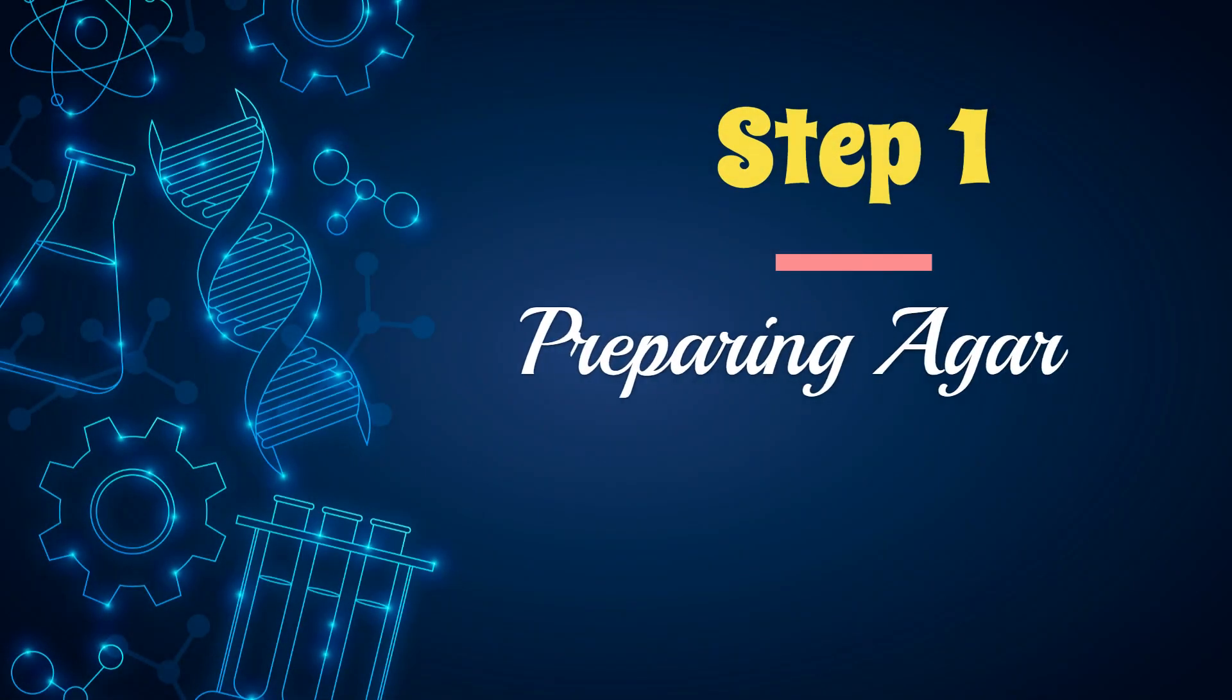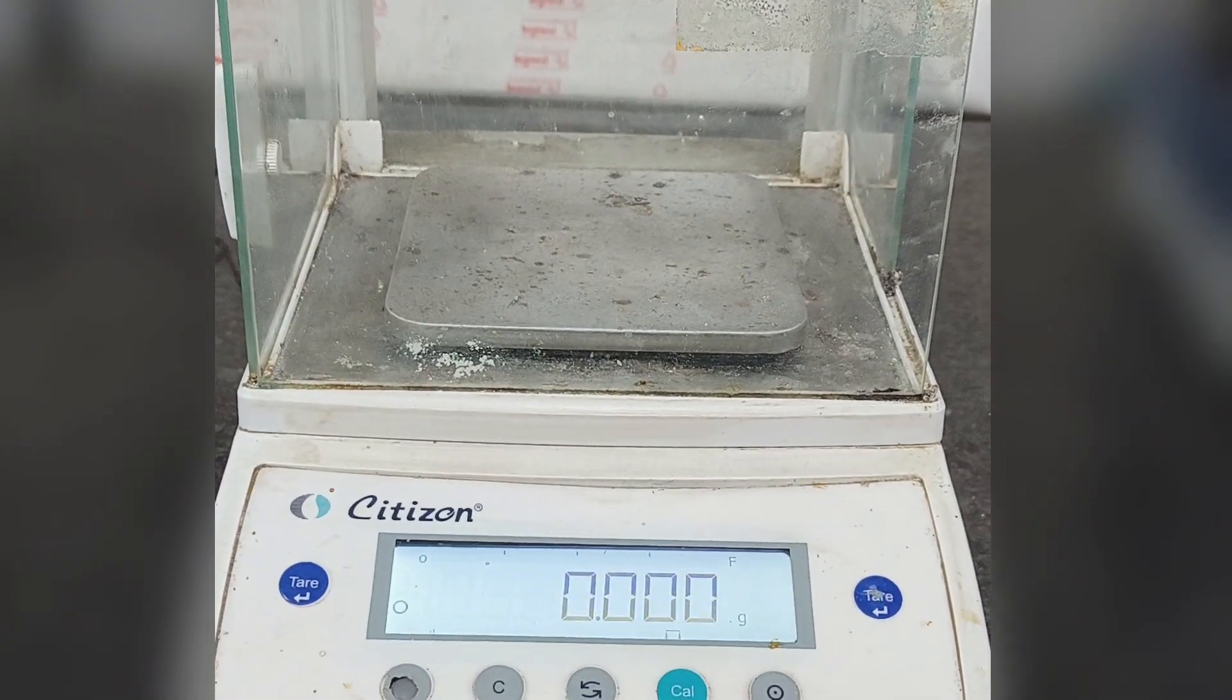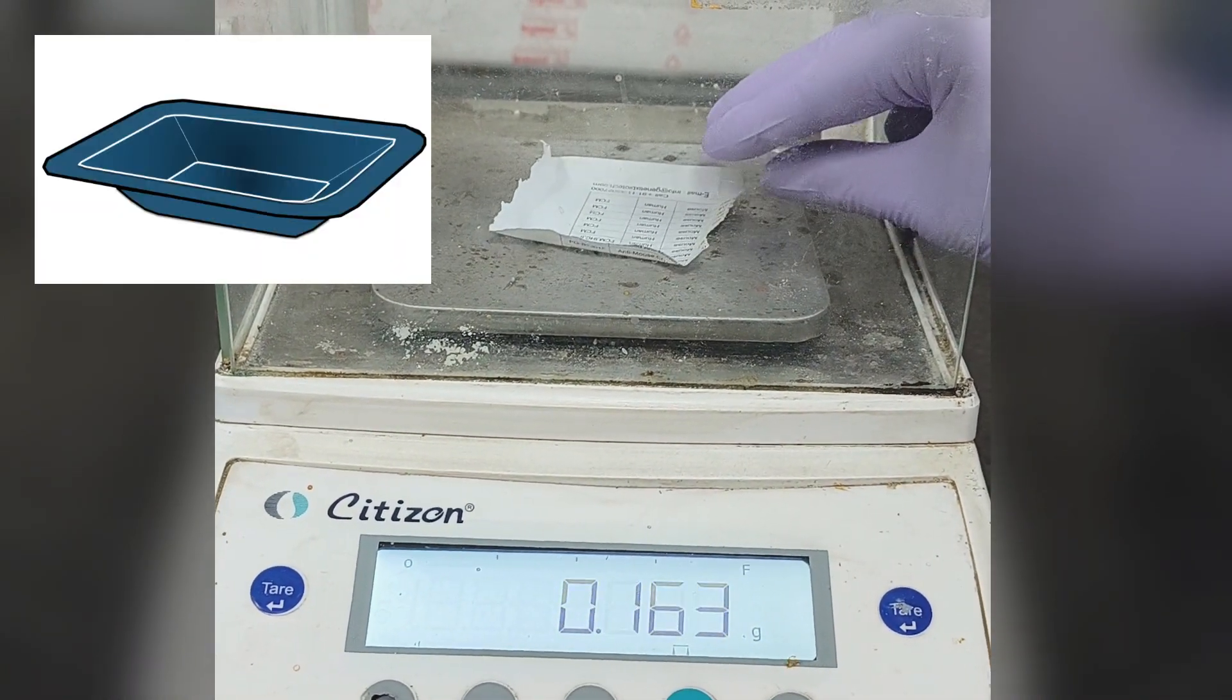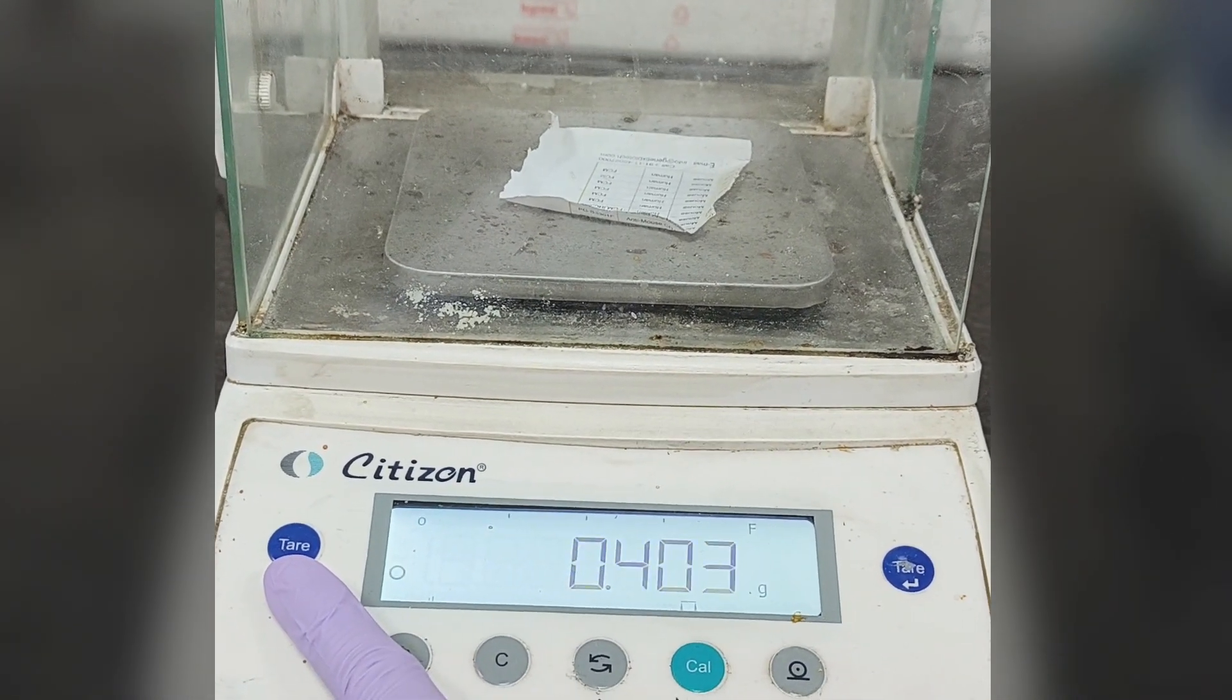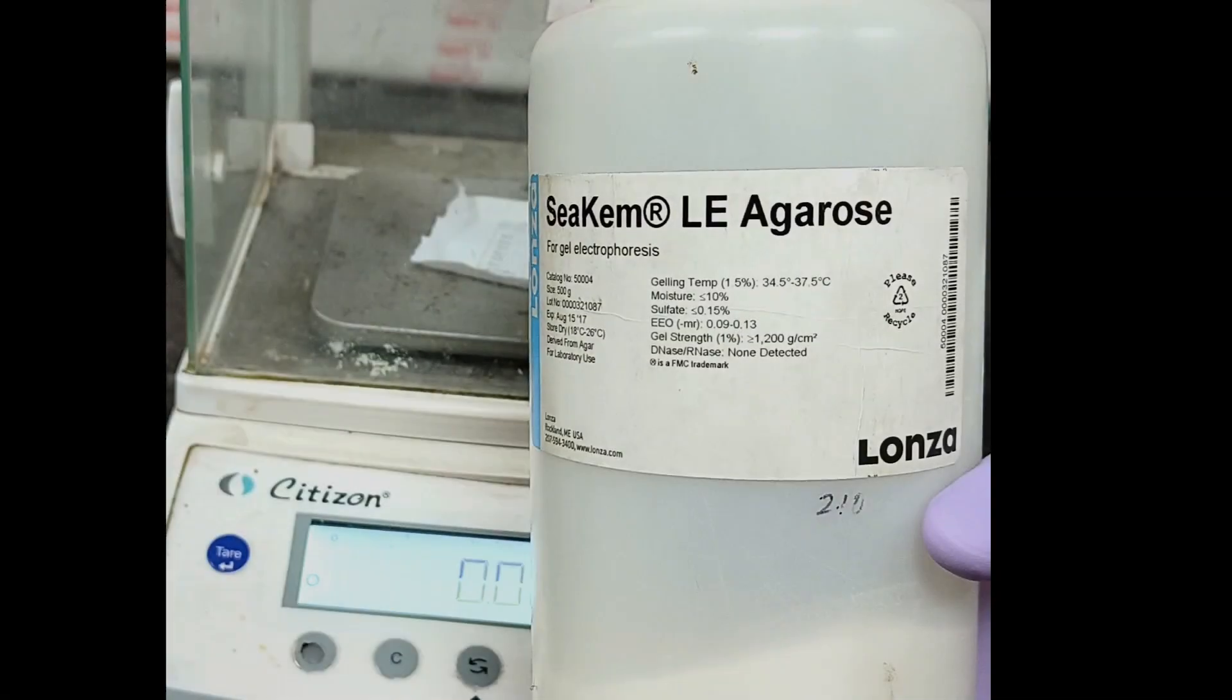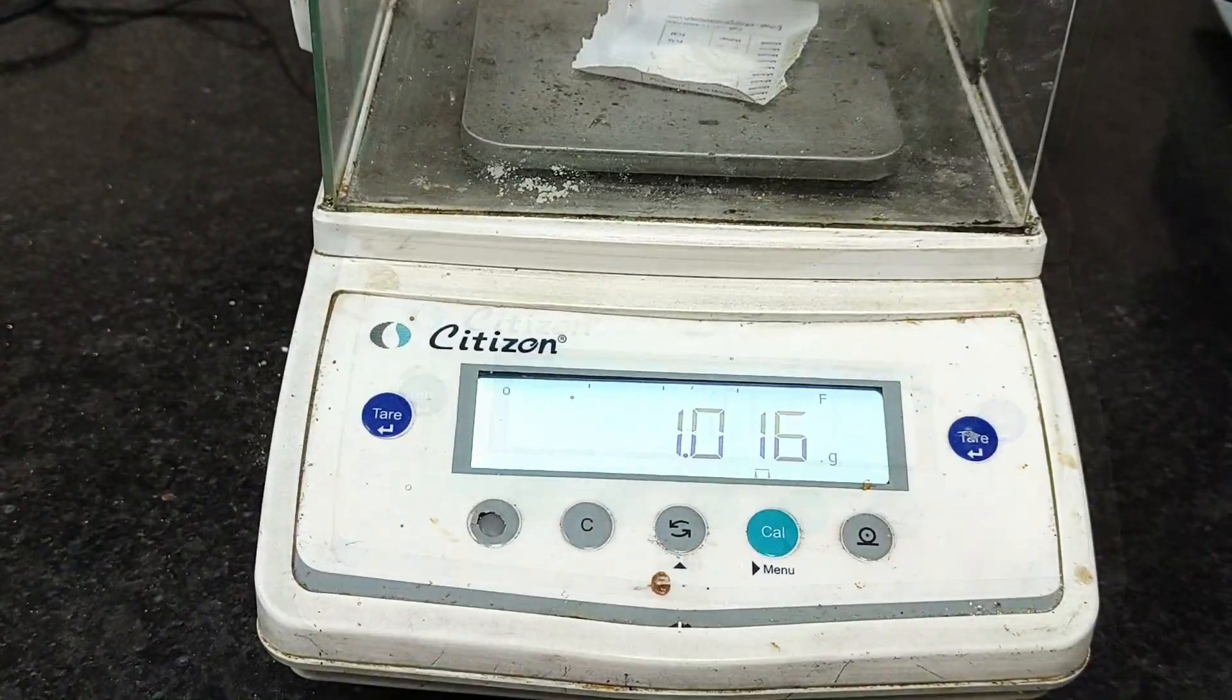Let's begin with the agarose gel preparation. We will make 1% agarose gel. For this, place a paper or weighing board on the weighing balance, and press tare or zero button to nullify the weight of the paper to weigh the agarose accurately. Weigh about 1 gram of agarose powder.